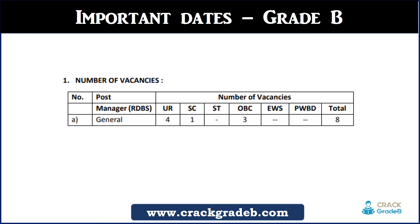In Grade B examination, there are total 8 vacancies. Out of these 8, 4 are for the general category and the rest are for the reserved category. These vacancies are for generalist only — there is no specialist vacancy in Grade B. This is the vacancy status for Grade B examination.